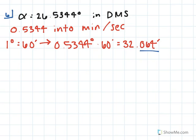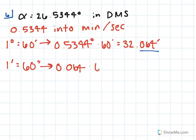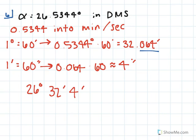Now we need to take the decimal portion of our minutes and use that to find our seconds measurement. We know 1 minute is equal to 60 seconds, so we'll take our decimal 0.064, multiply that by 60, and we get approximately 4 seconds. So we can now rewrite our angle as 26 degrees, 32 minutes, and 4 seconds.